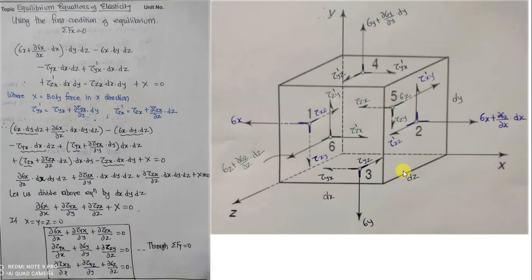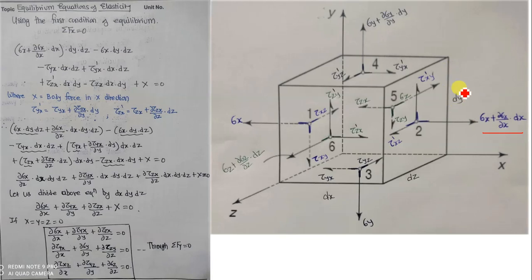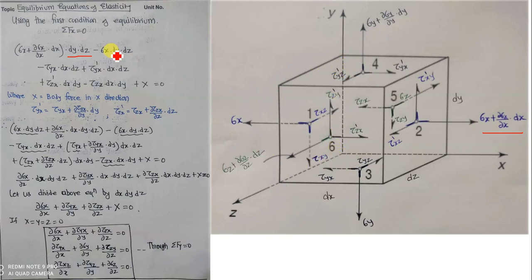Let us consider the stresses acting on the right face of the given element. Using summation Fx equals zero, the first force acting in the x direction is sigma x plus (∂sigma x / ∂x)·dx, acting on the plane whose area is dy·dz — stress times area equals force. The second stress acting in the x direction is sigma x, acting in the negative x direction, so we use a negative sign: minus sigma x times dy·dz.